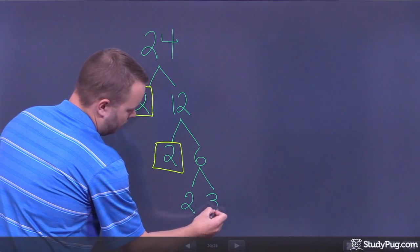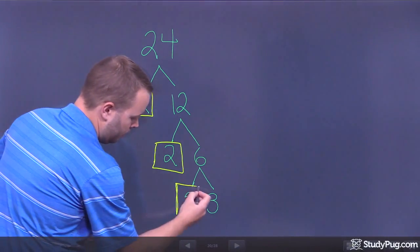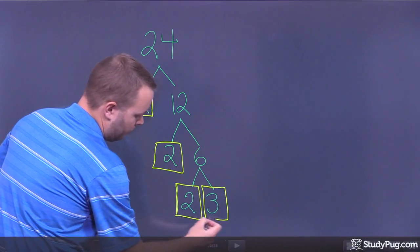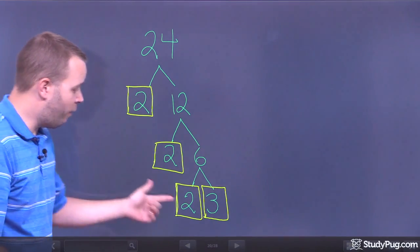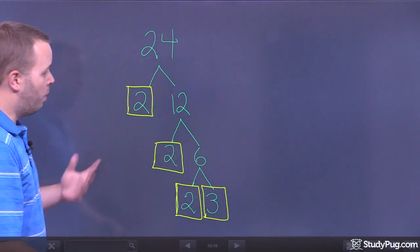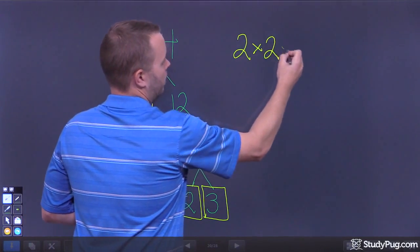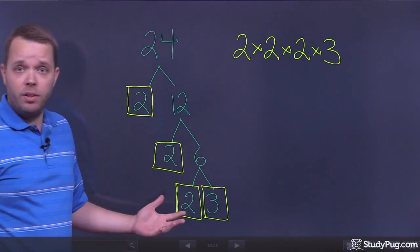So, 2 times 3 is equal to 6. And once again, there's the end of a branch. And because 3 is also a prime number, there's the end of a branch. Now, you'll notice I have 4 prime factors for this. The prime factorization of 24 is 2 times 2 times 2 times 3. Nothing to it.